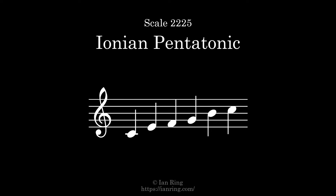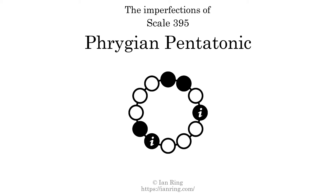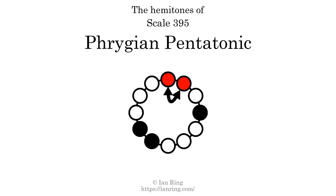Imperfections are tones that have no tone a perfect fifth interval above them. This scale has two imperfections, at two positions. Hemitones are instances where two tones in the scale are a semitone apart. This scale has two hemitones, at two positions. Co-hemitones are instances where two hemitones are beside each other. This scale has no co-hemitones.